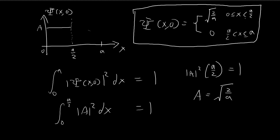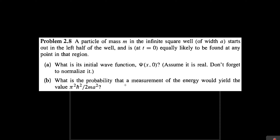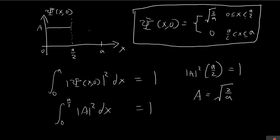Now that we've found the initial wave function, we can do part B. We want to find the probability that a measurement of energy will yield a specific result. If you notice, the formula for the energy states of an infinite square well — this actually corresponds to the first energy state, E1. So we need to find the probability that a measurement would yield E1.